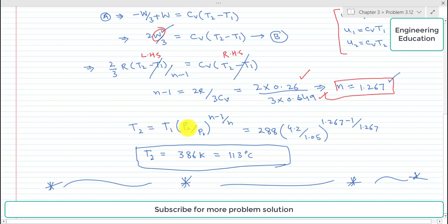T1 is 288 Kelvin, P2 is 4.2 and P1 is 1.05 bar, n is 1.267. So simplifying this,